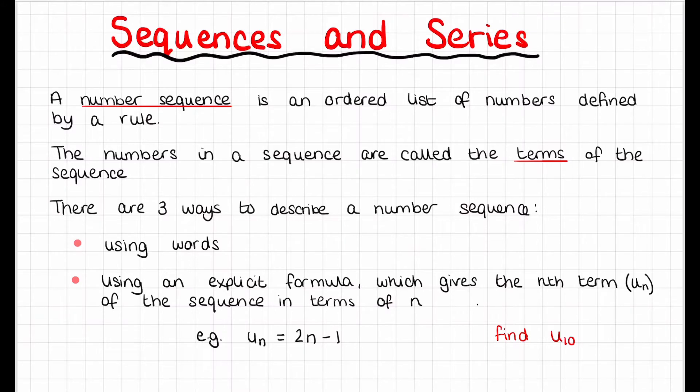A number sequence is an ordered list of numbers defined by a rule. The numbers in a sequence are called the terms of the sequence, and there are three ways to describe a number sequence.